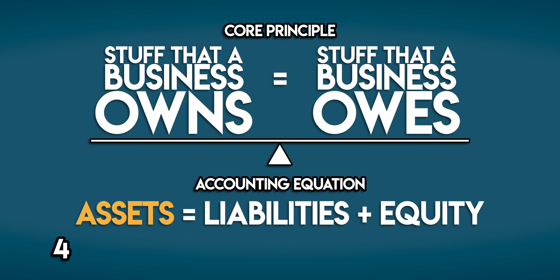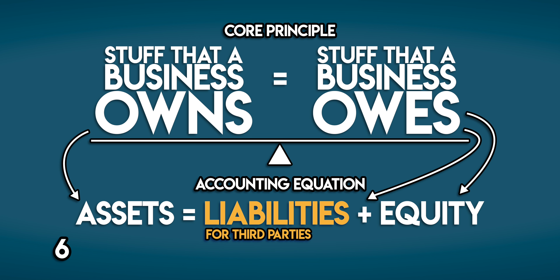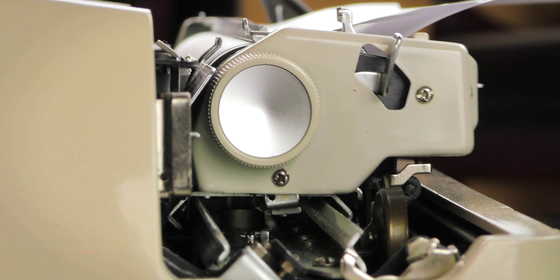The accounting equation says that a business's assets must equal its liabilities plus equity. Assets are the stuff that a business owns that have value — resources that are likely to bring economic benefit to a business in the future. An example would be a printing press that allows a publisher to print magazines which it sells for money. Whereas liabilities and equity represent the stuff that a business owes. Liabilities are the stuff that a business owes to third parties — a publisher might owe money to a freelance writer or journalist.